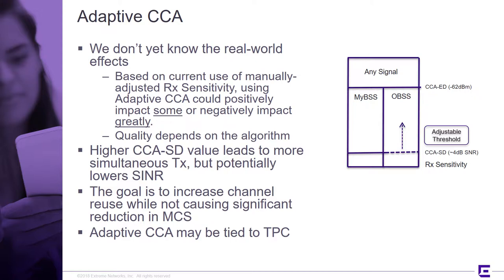Looking at the graphic on the right, our CCASD — the signal detect threshold — is typically statistically around -40 dB SNR, shown as a squiggly line. That can be dynamically adjusted for overlapping basic service sets, that is inter BSS, so we can essentially desensitize our receiver to them, ignore them, and transmit over the top of them without creating a contention scenario. That's the benefit of BSS coloring with adaptive CCA.